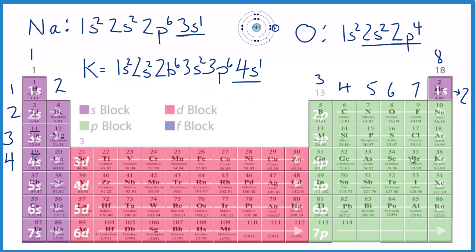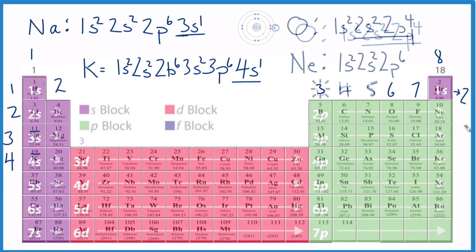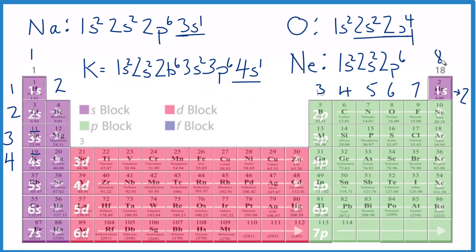Pause and give neon a try. From the atomic number, neon has a total of 10 electrons, but it's in group 18, so only 8 will be in the highest energy level. 2p6 and 2s2 — because 2 is the highest energy level — 2 plus 6 gives us 8.